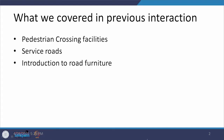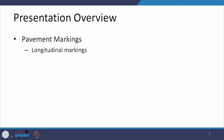If you look at the previous interaction, we closed our discussion on the pedestrian crossing facilities and then we talked about the service roads, the design aspects related to those, and towards the end we had some idea about the type of road furniture which needs to be provided. We also talked about the various markings — longitudinal markings and junction markings. Now in today's interaction, we are going to talk about the longitudinal markings.